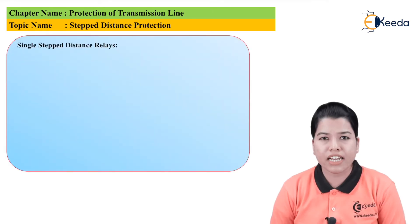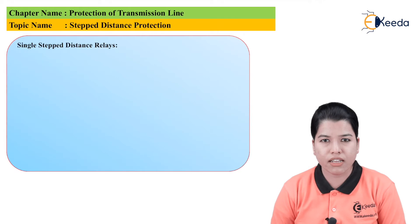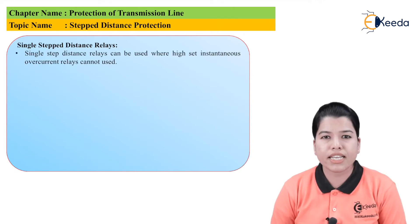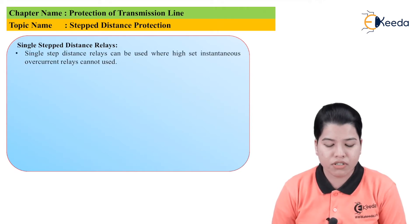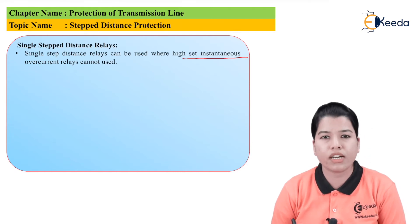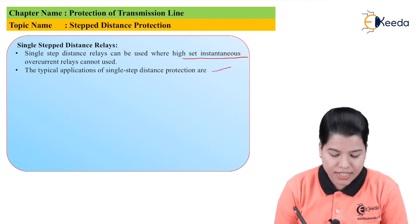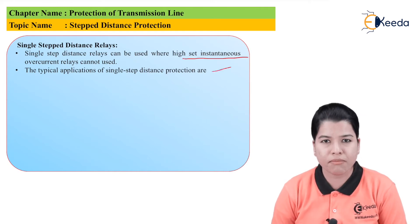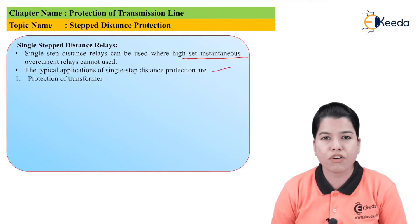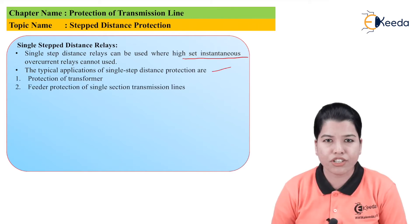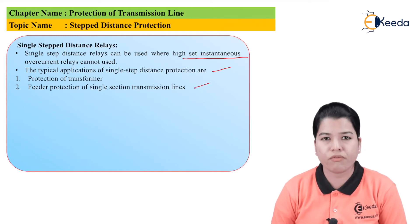Now let us study about the single stepped distance relay. The single stepped distance relay can be used where high-set instantaneous over-current relays cannot be used. The typical applications of the single step distance relay in the power system are: first, for the protection of transformers; second, for the feeder protection of a single section of transmission lines; and third, for the protection of bus bars.